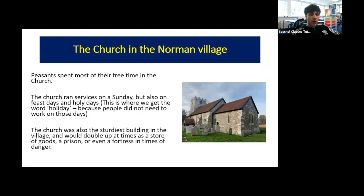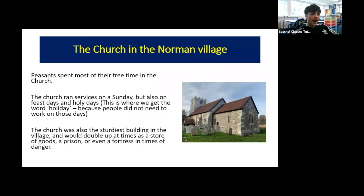The church was also the sturdiest building in each Norman village because it doubled up with a number of other functions. Sometimes it was used as a store for goods — farm produce or farming equipment. Sometimes it could be used as a prison, and sometimes even as a fortress in times of danger. If the village was under threat, people would gather there for safety, and its sturdiness made it less vulnerable to attack than other buildings.